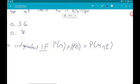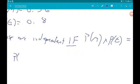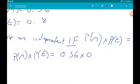So we can work out first of all the Probability of M times the Probability of E. That's 0.56 times 0.8. Now, that gives us 0.448.